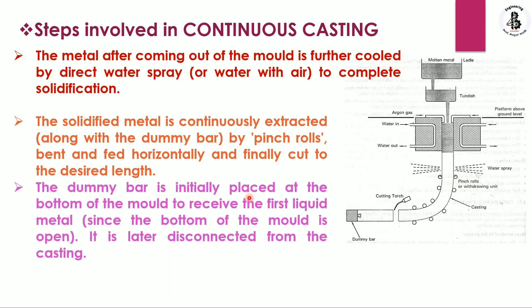The dummy bar is initially placed at the bottom of the mold to receive the first liquid metal, and it is later disconnected from the castings once the exact required length of the component is obtained.